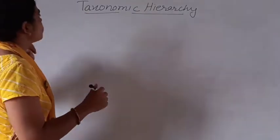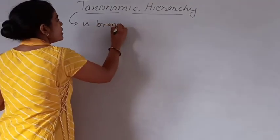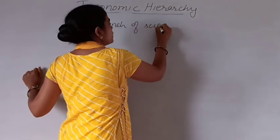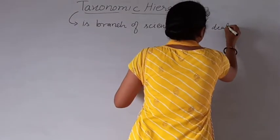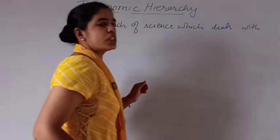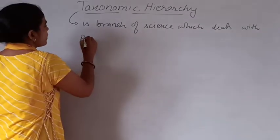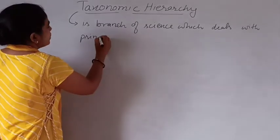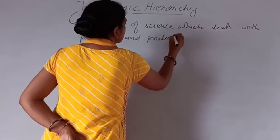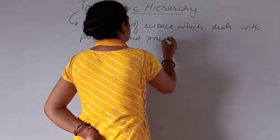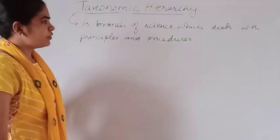First of all, what is taxonomy? Taxonomy is the branch of science which deals with the principles and procedures of classification.